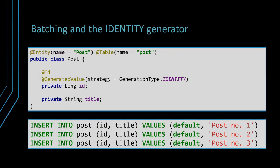If the post identifier uses an identity column, Hibernate will disable batch inserts. Once an entity becomes managed, the persistence context needs to know the entity identifier to construct the first-level cache entry key, and for identity columns, the only way to find the primary key value is to execute the insert statement. This restriction does not apply to update and delete statements, which can still benefit from JDBC batching even if the entity uses the identity strategy.